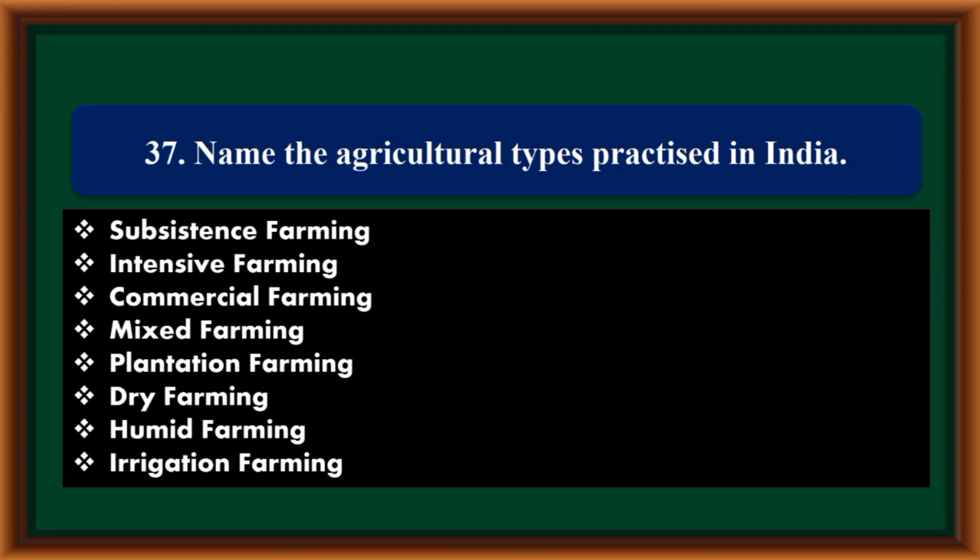Name the agricultural types practiced in India: Subsistence farming, intensive farming, commercial farming, mixed farming, plantation farming, dry farming, humid farming, and irrigation farming.